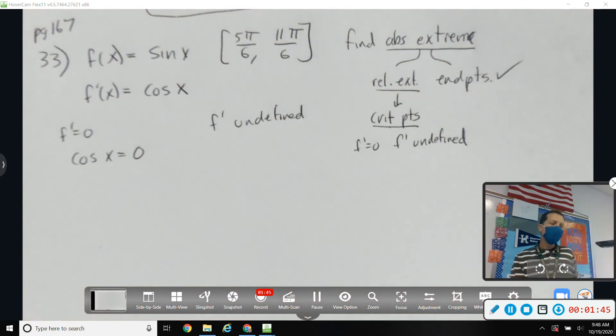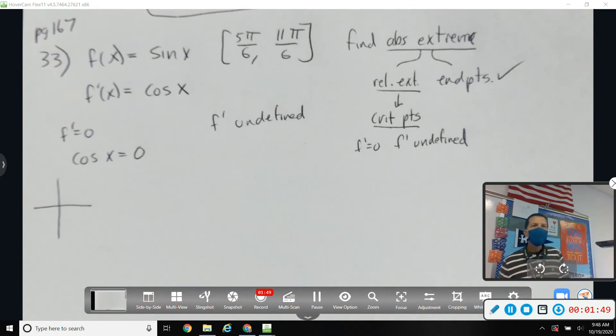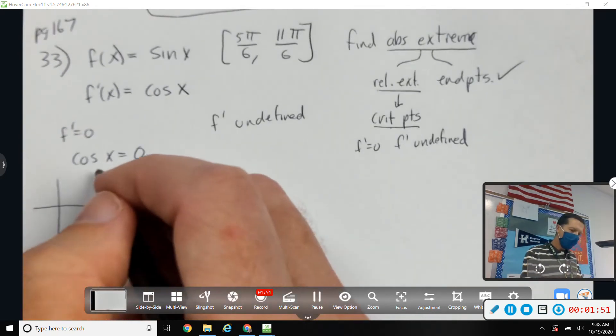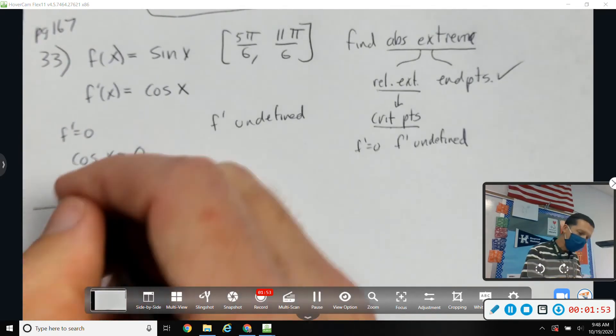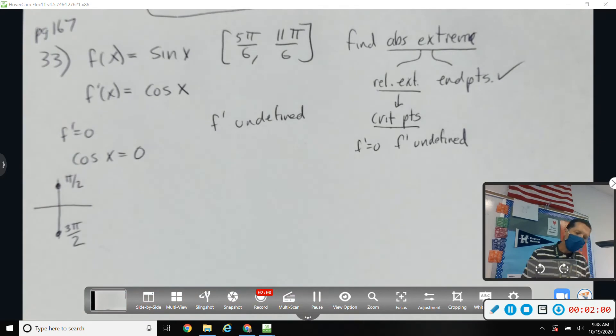And we want to know where f prime is undefined. So zero first. Let's see, cosine is zero. Cosine is the left and right coordinate, so that would be zero at those two spots: pi over two and three pi over two.